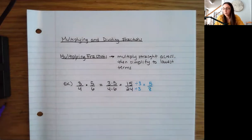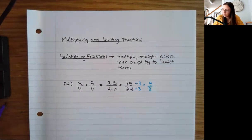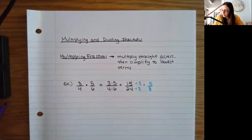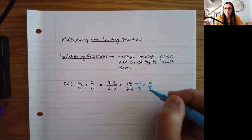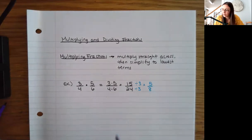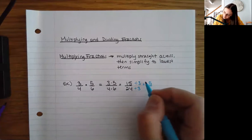I'm not using prime factorization here, so I'm going to double check and make sure I don't miss anything. 5 and 8 have no factors in common — 5 is just 5, and 8 is 2 times 2 times 2, so all the prime factors are 2s. So 5/8 is going to be my final answer.